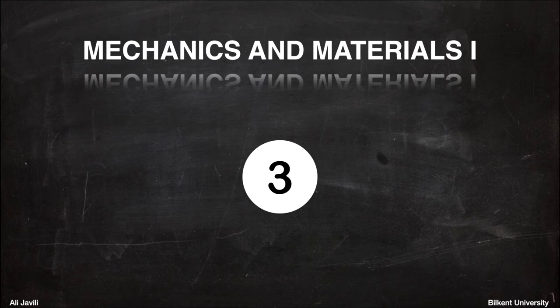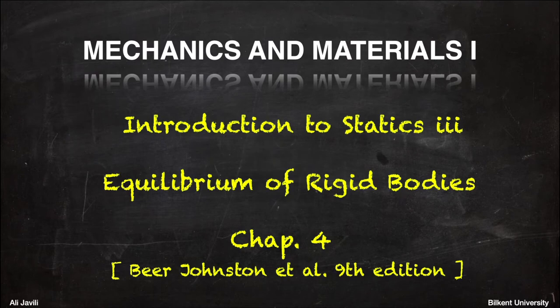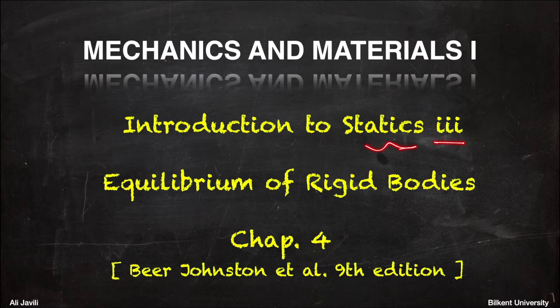Hello everyone, welcome to our third lecture on Mechanics and Materials 1. In this lecture we would like to talk about equilibrium of rigid bodies, essentially covering Chapter 4 of the Beer-Johnson book. This is also our third lecture in the lecture series on Introduction to Statics.